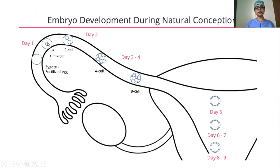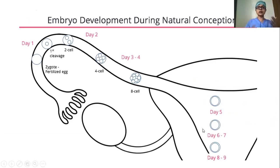All of this fertilization is happening in the fallopian tube. One sperm forms the first cleavage cell embryo, and then the embryo naturally travels back through the fallopian tube and sticks to the uterus. This is how the embryo is formed in the natural cycle, and also in vitro — once the sperm finds its way through natural selection.